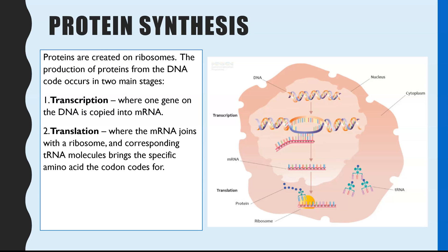It happens in two stages. The first stage is inside the nucleus and is called transcription. This is where one of the genes on the entire DNA molecule is copied into mRNA. The second step is called translation, where the mRNA attaches to a ribosome within the cytoplasm, and corresponding tRNA molecules bring specific amino acids that match the codons on the mRNA.